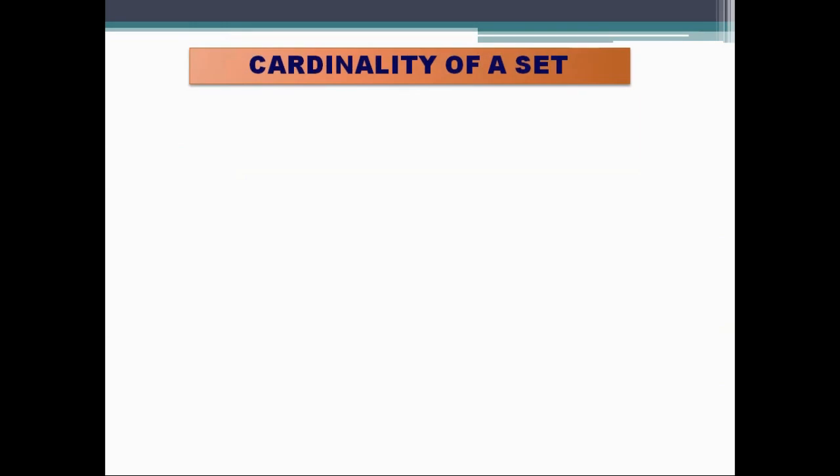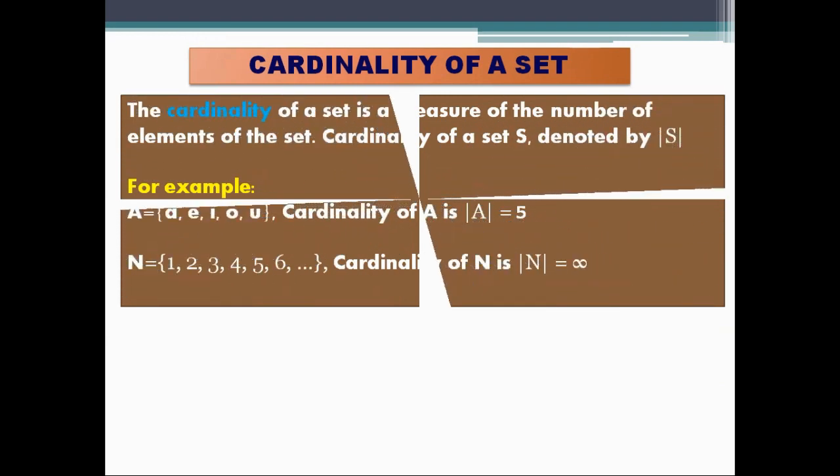Here we will talk about cardinality of a set. Let's see. The cardinality of a set is a measure of the number of elements of the set. Cardinality of a set S is denoted by |S|. So the cardinality of any set measures the number of elements present in that set. And if we have to represent the cardinality of any set, we represent it this way.